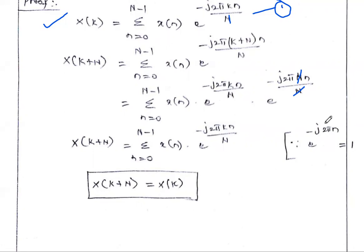Now, e^(−j2πn) can be written as cos(2πn) − j·sin(2πn). The value of cos(2πn) is (−1)^(2n), which equals +1 for any integer n, since 2πn is always an even multiple of π. And sin(2πn) = 0 for any integer n. Therefore, e^(−j2πn) = 1 for any value of n.